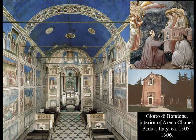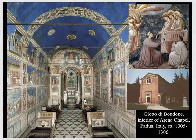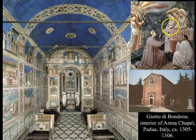Giotto is really considered the father of the Renaissance and starts diving into Renaissance characteristics of painting. This is the Arena Chapel, which is very well known for fresco painting — remember, fresco is painting on wet plaster and letting the color sink into it. Giotto is well known for this chapel.